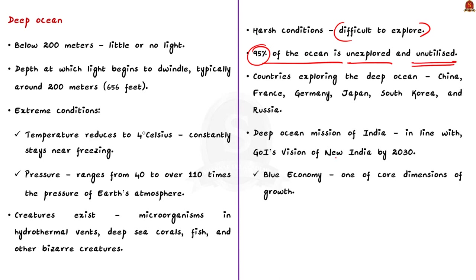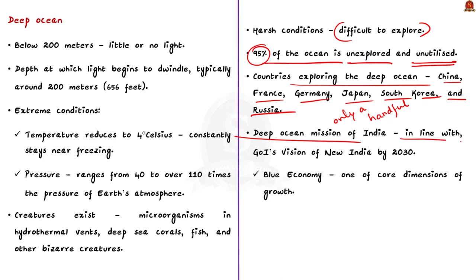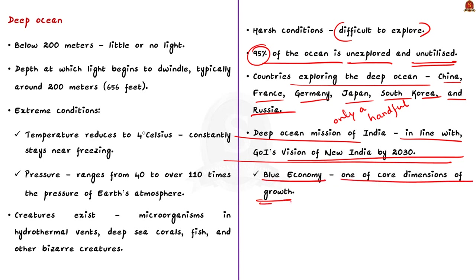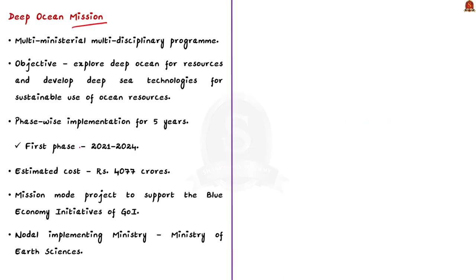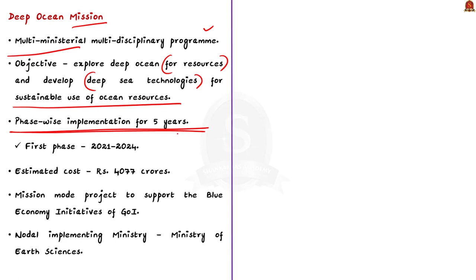Many countries have already begun to explore the deep ocean, including China, France, Germany, Japan, South Korea and Russia. Now India is also joining this group with its Deep Ocean Mission, which is in line with the government of India's vision of New India by 2030, highlighting the blue economy as one of 10 core dimensions of growth. The Deep Ocean Mission is a multi-ministerial, multidisciplinary program. Its objective is to explore the deep ocean for resources and to develop deep sea technologies for sustainable use of ocean resources. This mission will be implemented in a phase-wise manner for five years, with the first phase spanning 2021 to 2024. The estimated cost is around Rs. 4000 crores, and it is a mission mode project to support blue economy initiatives. The Ministry of Earth Sciences is the nodal ministry for implementing this mission.